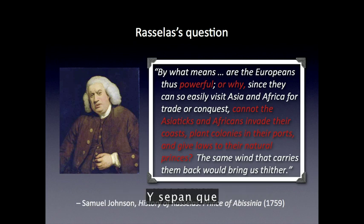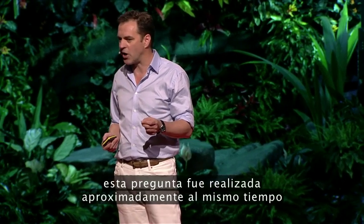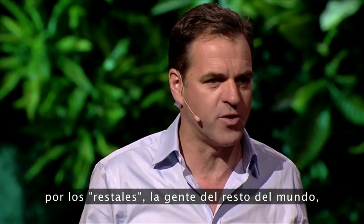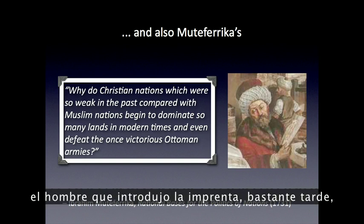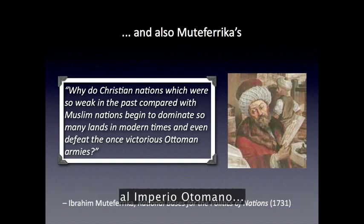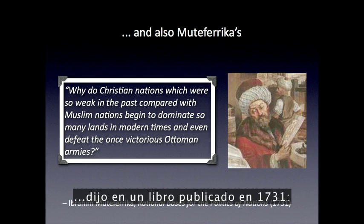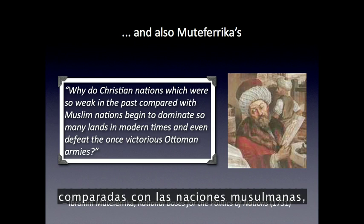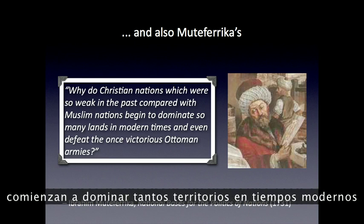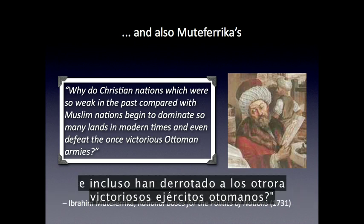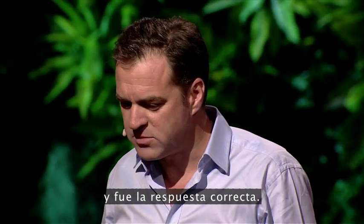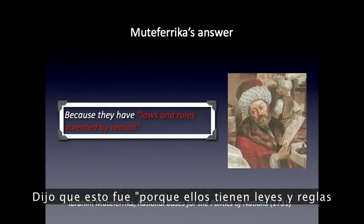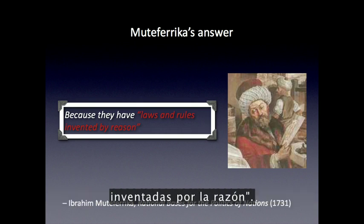That's a great question, and it was also being asked at roughly the same time by people in the rest of the world — like Ibrahim Muteferrika, an Ottoman official, the man who introduced printing very belatedly to the Ottoman Empire, who said in a book published in 1731: "Why do Christian nations which were so weak in the past compared with Muslim nations begin to dominate so many lands in modern times and even defeat the once victorious Ottoman armies?" Unlike Rasselas, Muteferrika had an answer to that question which was correct. He said it was because "they have laws and rules invented by reason."